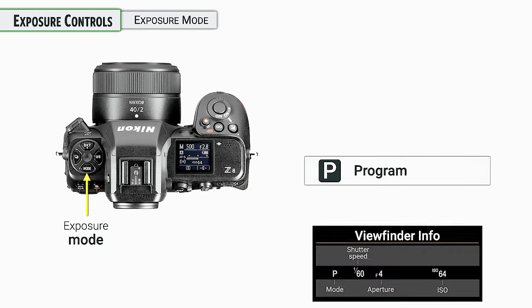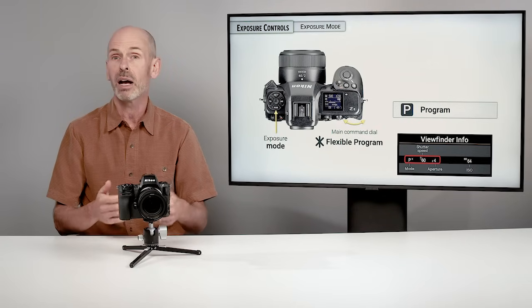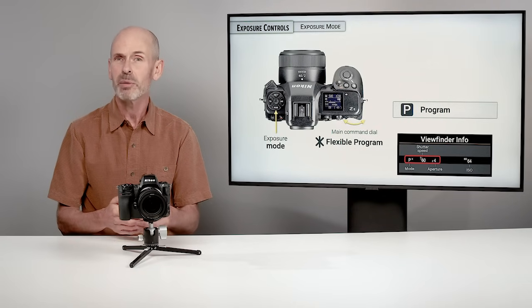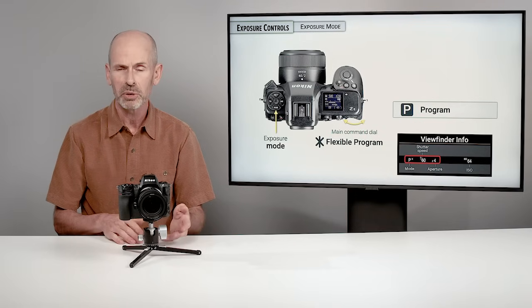When you're in program mode, take a look in the viewfinder or on the monitor to check the shutter speeds and apertures the camera is providing. This lets you know if they're appropriate for the subject you're shooting. You can turn the main command dial to adjust the flexible program, which lets you adjust shutter speed and aperture in combination — giving shallower or more depth of field, or a faster or slower shutter speed.